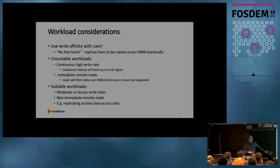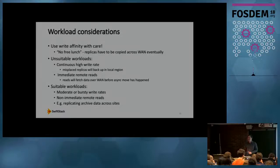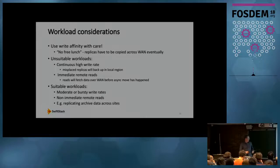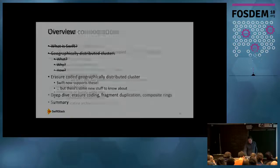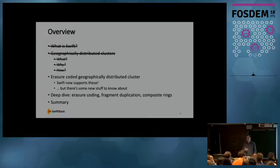There are some workloads where write affinity is a really useful tool. If you have bursty traffic — rapidly accepting many writes, followed by quiet periods when async processes can move replicas towards dispersion goals — write affinity works well. In particular, if remote clients don't have a requirement to immediately read data, write affinity is suitable. For example, if your goal is to replicate archives for delayed access by clients in multiple regions, Swift is very well able to support geographically distributed clusters.